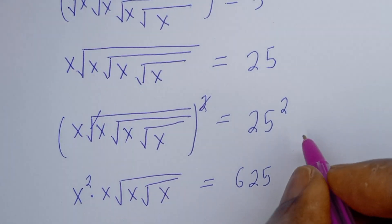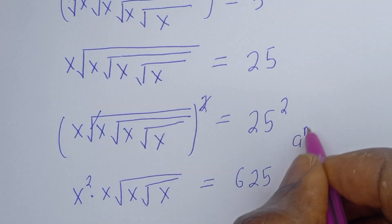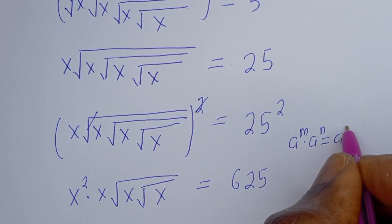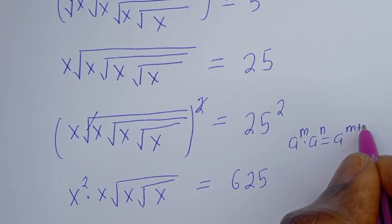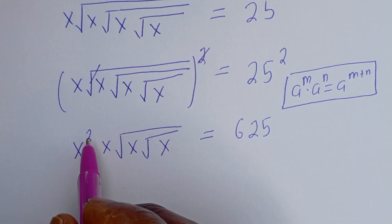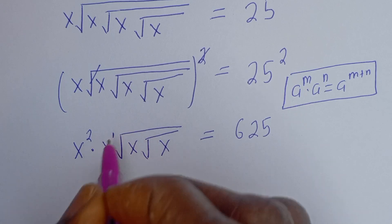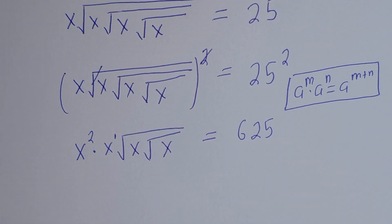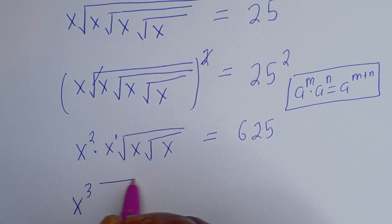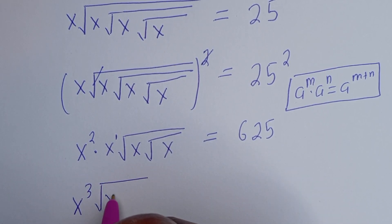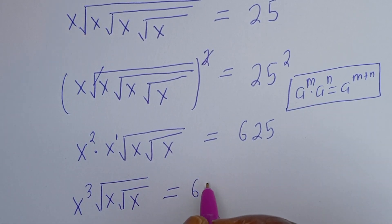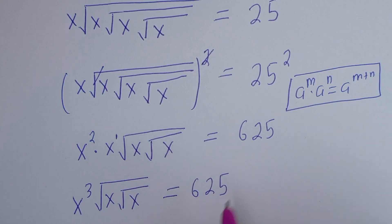Take note that if you have a to the power of m multiplied by a to the power of n, this is equal to a to the power of m plus n. So here this is s squared, and this is s to the power of 1. Then we still have s squared times s, times square root of s, times square root of s, equal to 625.